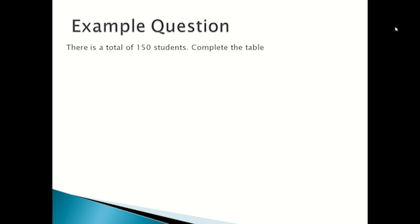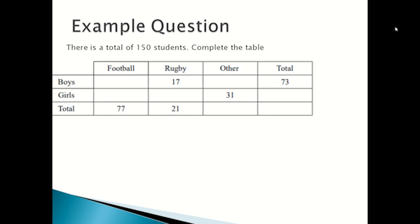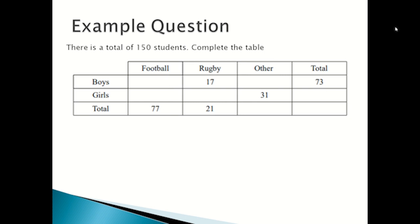Here is an example question: there is a total of 150 students — complete the table. This is the table we've been given. Usually it will have a few numbers already in there, but the numbers will be placed so that it will be easier to calculate the other missing numbers.